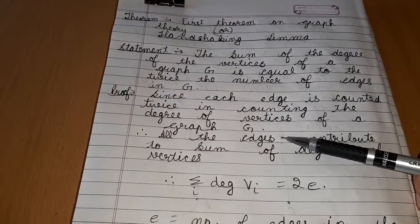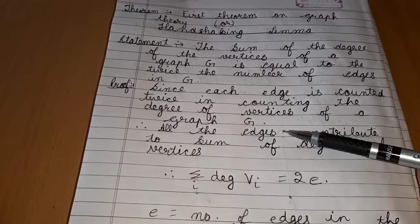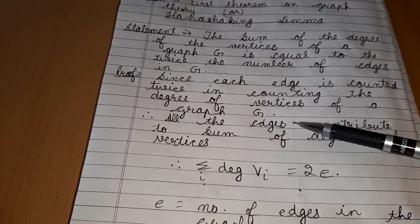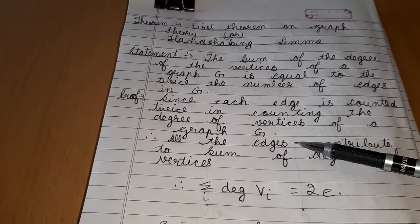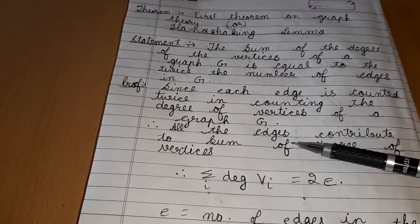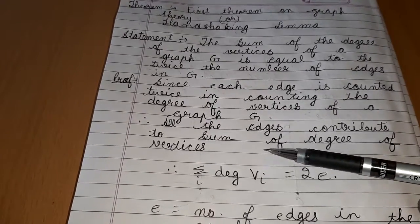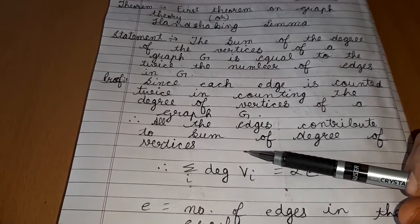Since each edge contributes to degree, the sum of degree of all vertices in G is twice the number of edges in G. Therefore, all the edges contribute sum of degree of vertices.